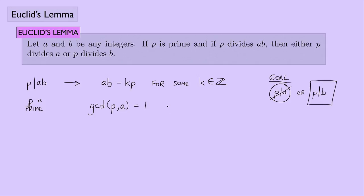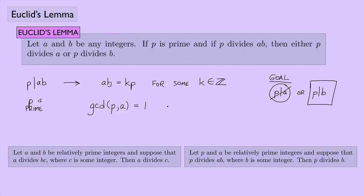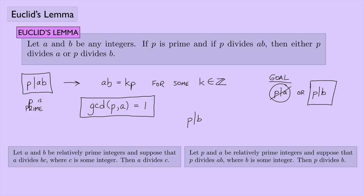From an earlier result, if a and b are relatively prime integers and a divides b times c, then a divides c. Rewriting in our terms: p and a are relatively prime, and p divides a times b. By that earlier result, p divides b. And p divides b is exactly what we needed to show. So this idea from a previous video comes in very handy to prove Euclid's Lemma.